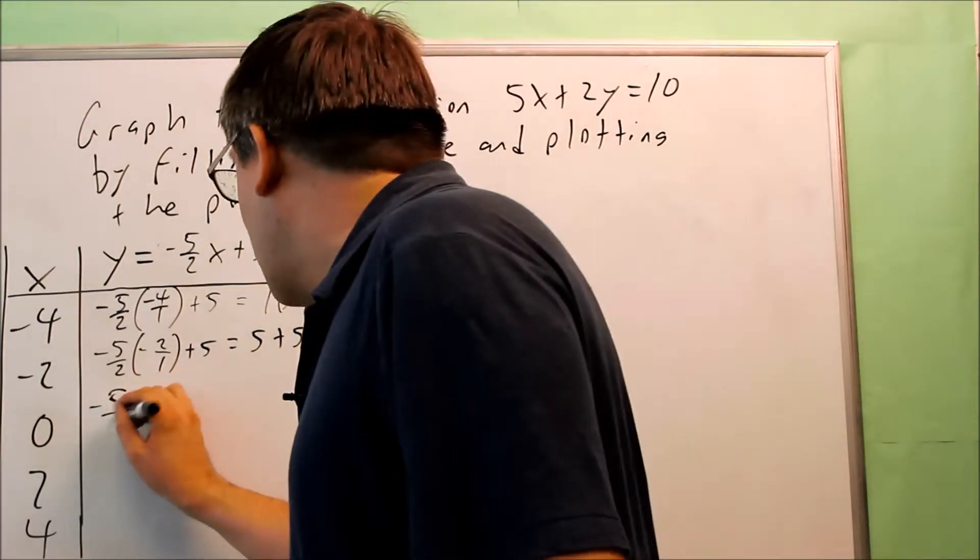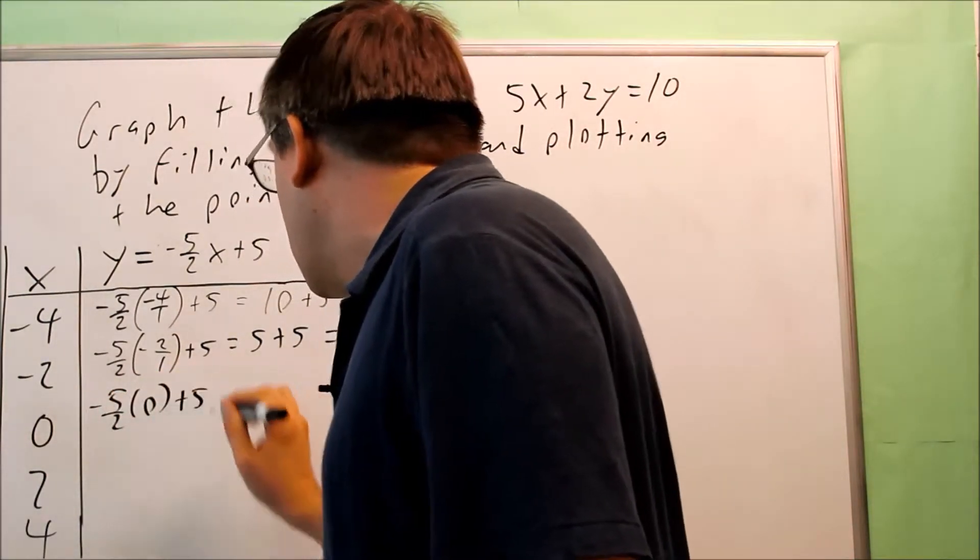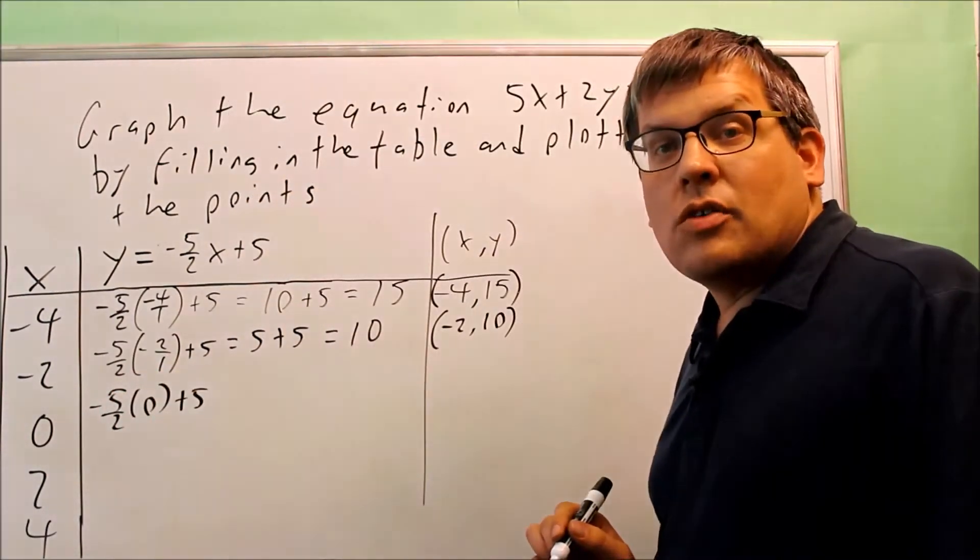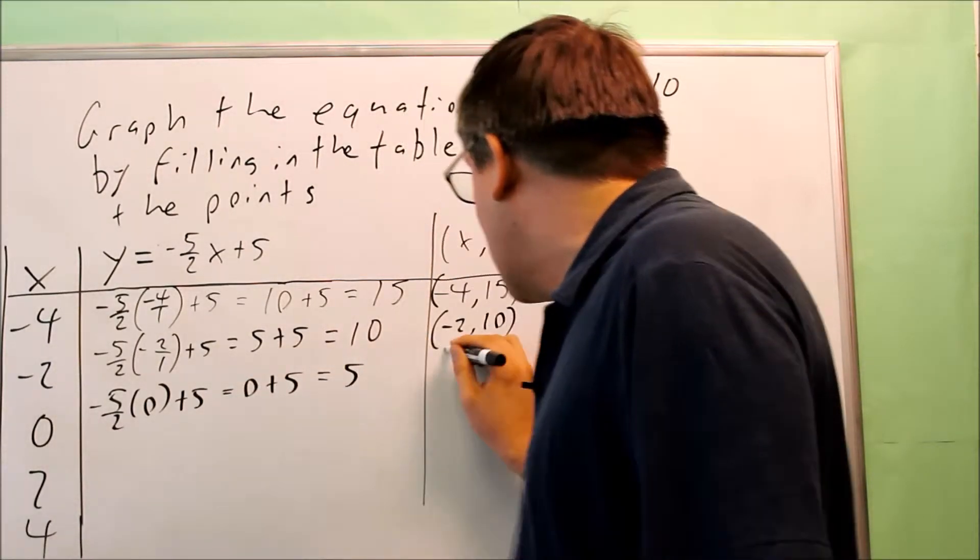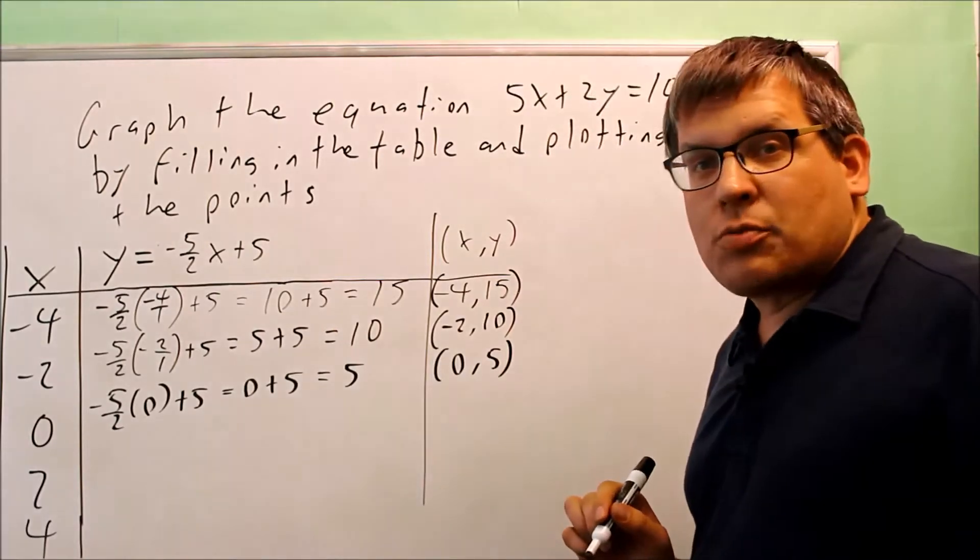Keep on going. Negative 5 halves times 0. 0 times anything is going to be 0. So this is 0 plus 5. That gives you 5. Therefore, 0, 5 is the next point.